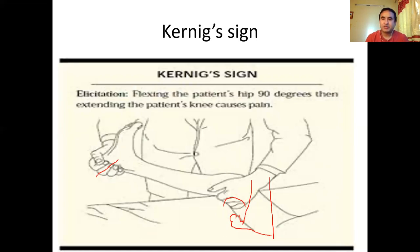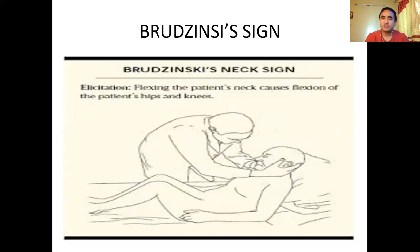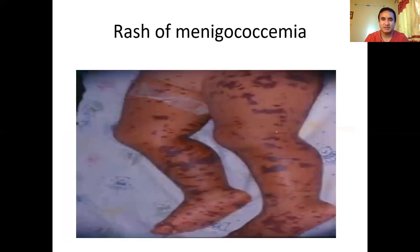To demonstrate Kernig's sign: first flex the hip to 90 degrees, then go on extending the knee. If there is hamstring spasm within 135 degrees (90 plus 45 degrees), Kernig's sign is positive — one hand is extending and the other is feeling the spasm. For Brudzinski's neck sign, flex the neck; if there is flexion of the hip and knee in response, Brudzinski's sign is positive. These are the basic meningeal signs to assess in a suspected meningitis patient. This image shows the purpuric rash of meningococcemia — when you see this type of purpuric rash, always think of meningococcemia.